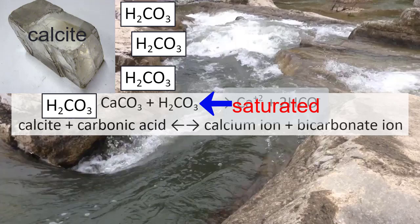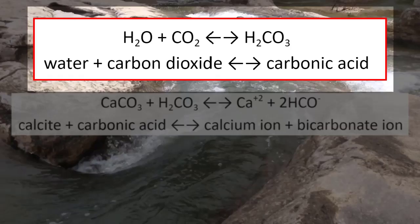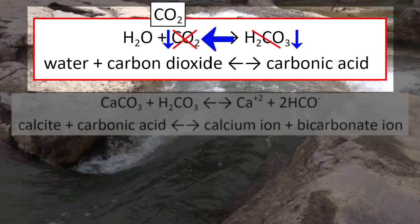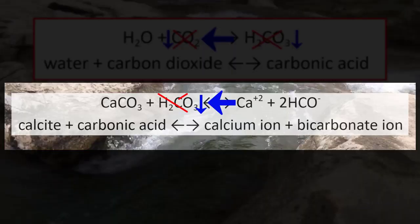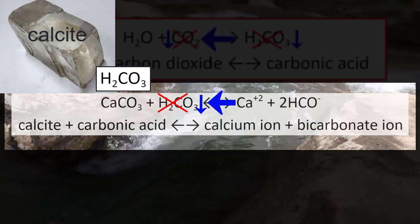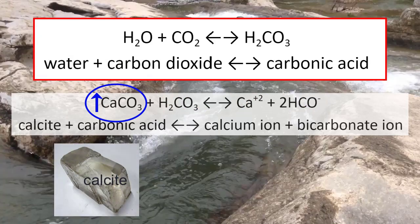How does that happen? When carbon dioxide gas decreases in water, going back to the first reaction, that means there's less carbonic acid. Less carbonic acid in this reaction will drive the equation to the left to produce more. The ions will recombine to produce more calcite and it will precipitate. So the primary cause of calcite precipitation is actually the reduction of carbon dioxide in the water that has the dissolved ions in it.